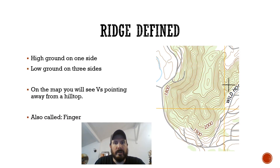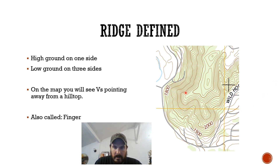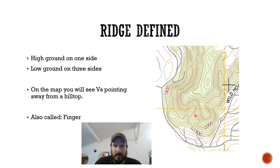The next thing we're talking about is a ridge. You're going to have high ground on one side of you and low ground on three sides as you're standing on the ground. On the map this is going to look like V shapes pointing away from your hilltops. You'll have a wide V or more sharp V's — almost a U shape for a wide ridge line, also called a finger. We'll use the term ridge line.